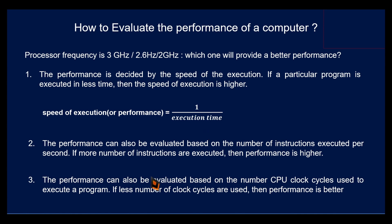The performance can also be evaluated based on the number of instructions executed per second. If more number of instructions are executed, then performance is higher. The performance is also evaluated based on the number of CPU clock cycles used to execute a particular program. If fewer clock cycles are used, then the performance is better.